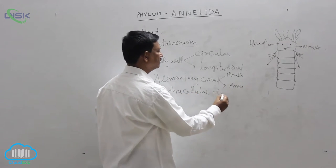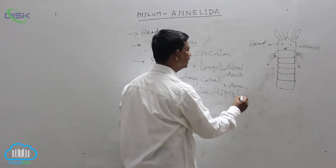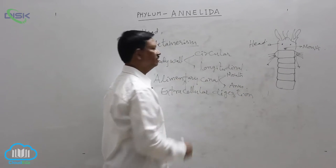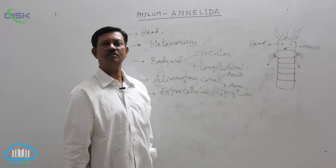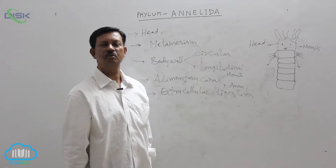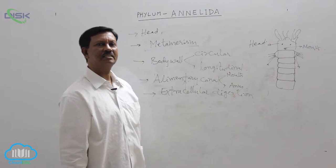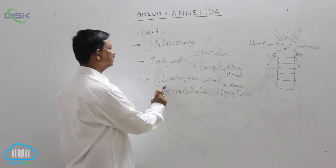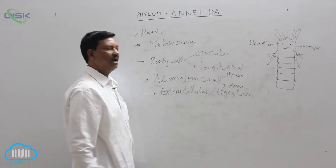What is extracellular digestion? Digestion takes place in the alimentary canal. With the help of enzymes large particles are broken down into simple particles and digestion is completed. This is a well developed character which is present in higher animals.